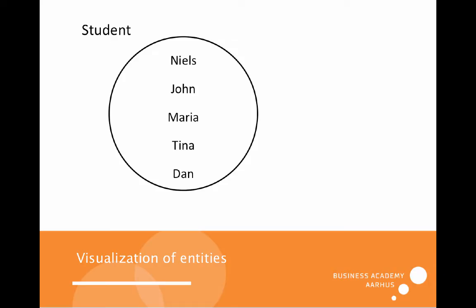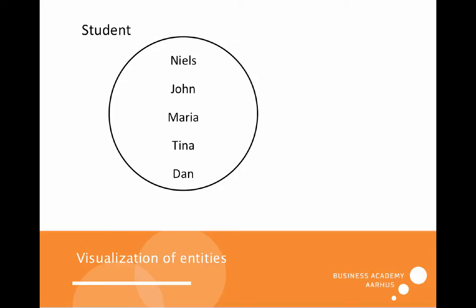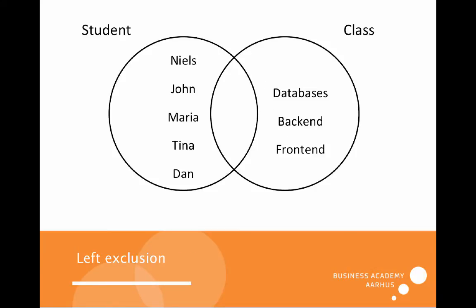We have the students in one circle and we have our classes in one circle. When we look at the visualization of these two tables together, we can see that they have some overlap. And with SQL, we can see what we can get out of it.